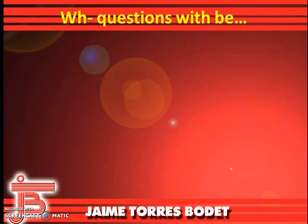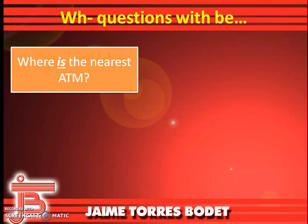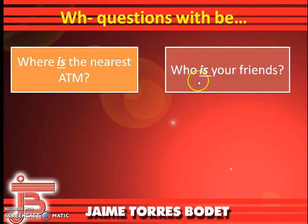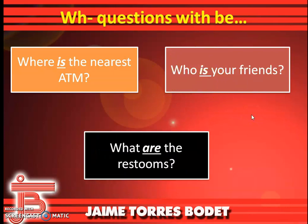And we're going to start questions using the verb BE. The first one: Where is the nearest ATM? We use the verb 'is' in the question. The next one: Who is your friend? Again, we use another question with a W and the verb. And the last one: Where are the restrooms? 'Is' and 'are' are the same verb BE, so we can use either.